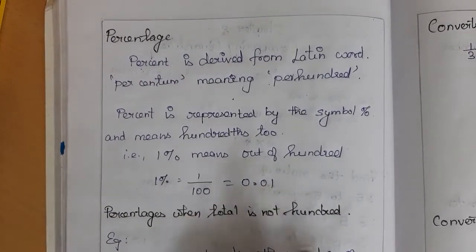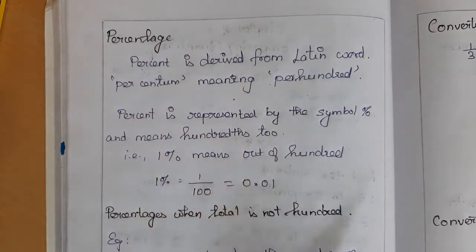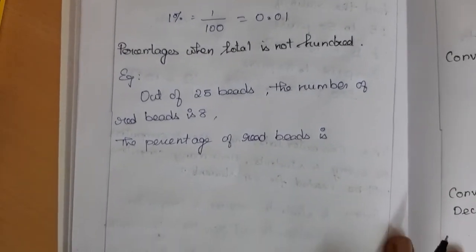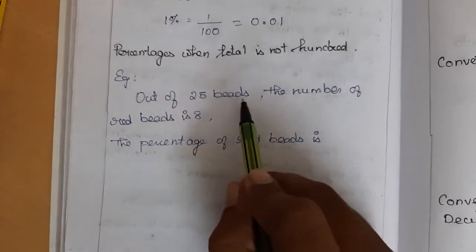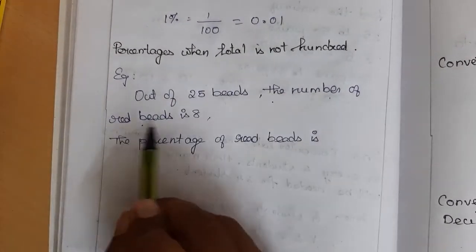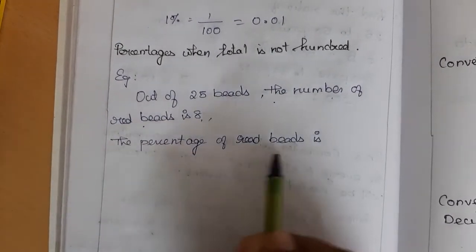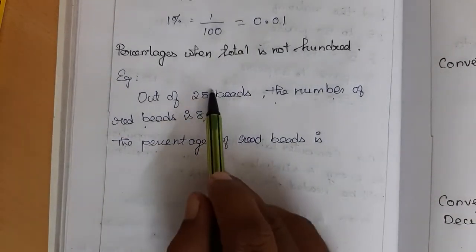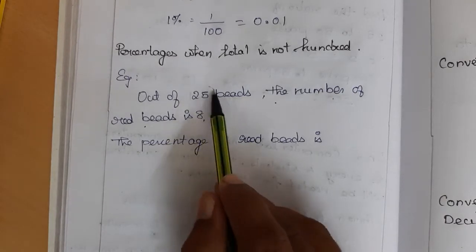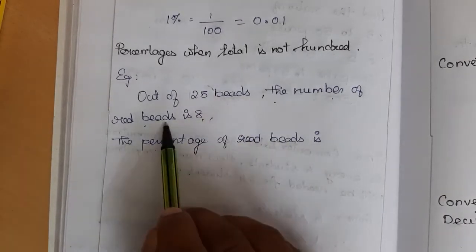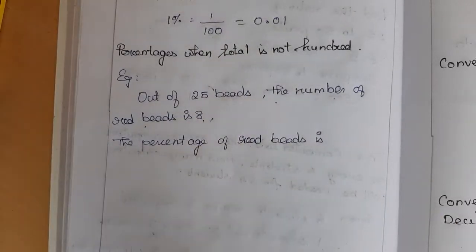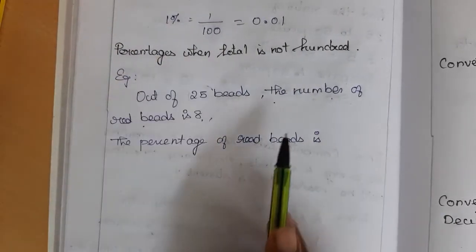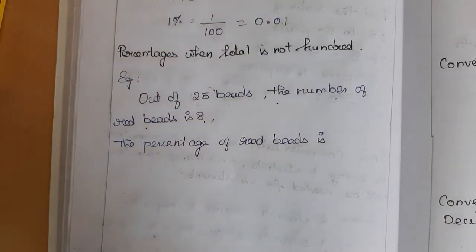When the total is not hundred, how do we find a percentage? Here is an example: out of 25 beads, the number of red beads is 8. We have to find the percentage of red beads. Here the total is not 100 — total is 25 — so out of 25, 8 are red beads.